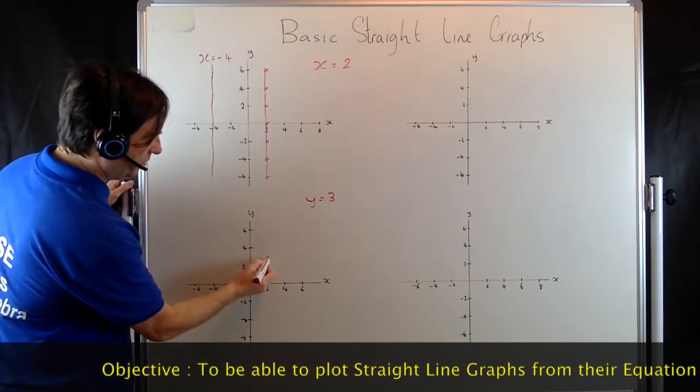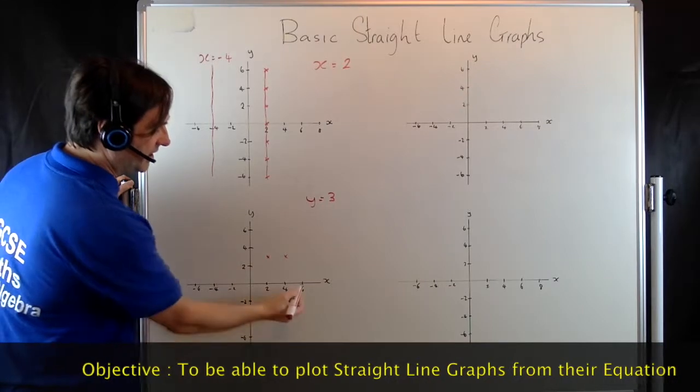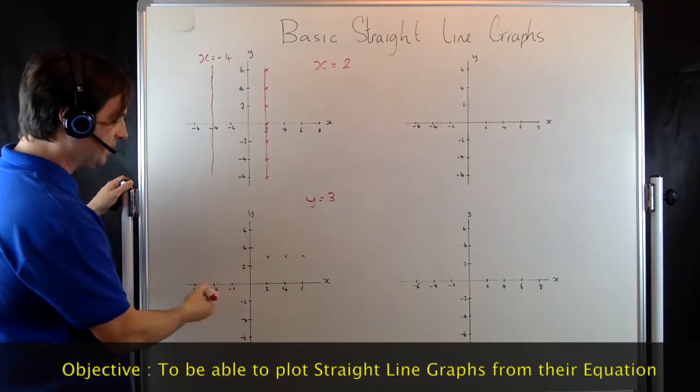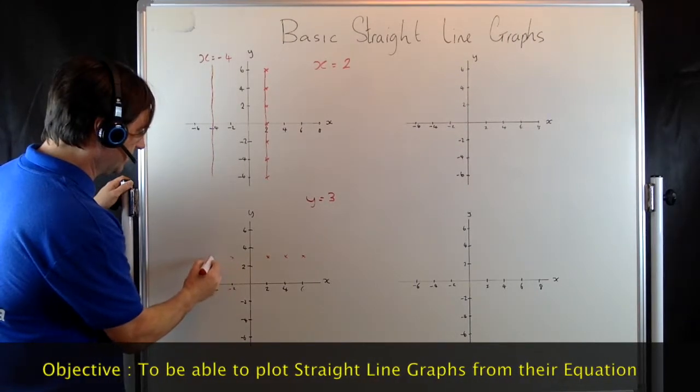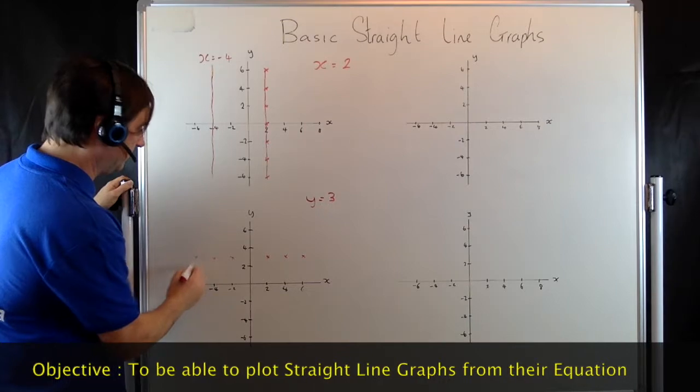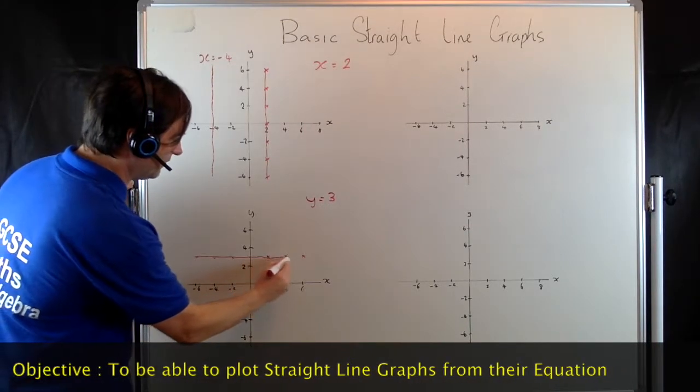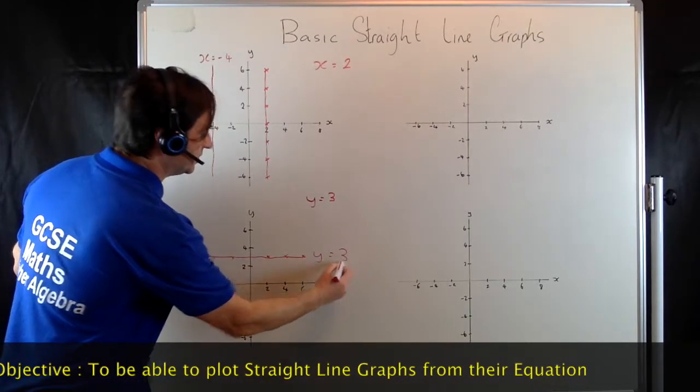So when x equals 2, y would be 3. When x equals 4, y would be 3. When x equals 6, y would be 3. At any point, whatever x equals, y is always going to equal 3. So we can draw the line across. This graph here is the graph of y equals 3.